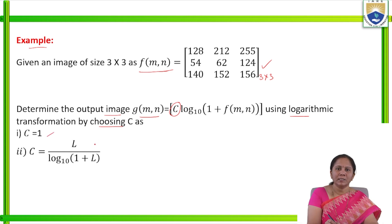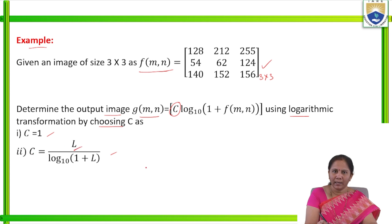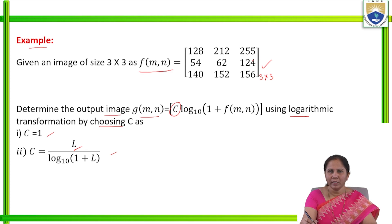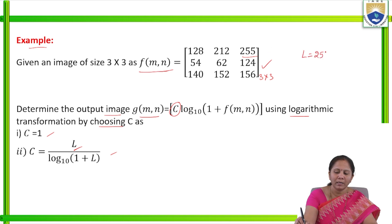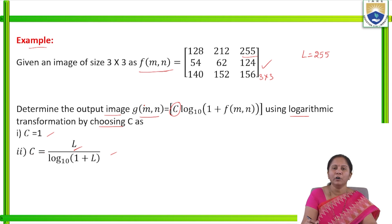In one case, we consider c = 1. In another case, c = L / log₁₀(1 + L), where L represents the gray level. In this given image, the maximum gray level is 255, so L = 255. After substituting, we get the value of c, and that c will be replaced in the equation to get the new value of g(m, n).